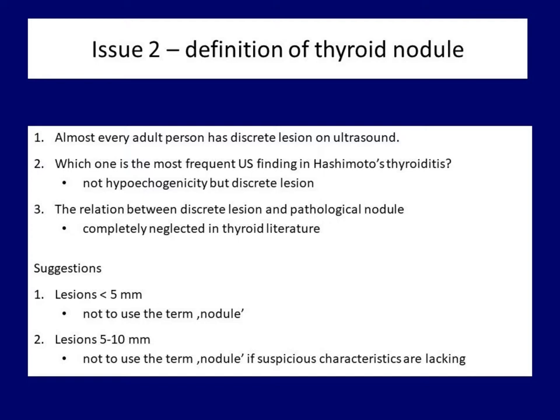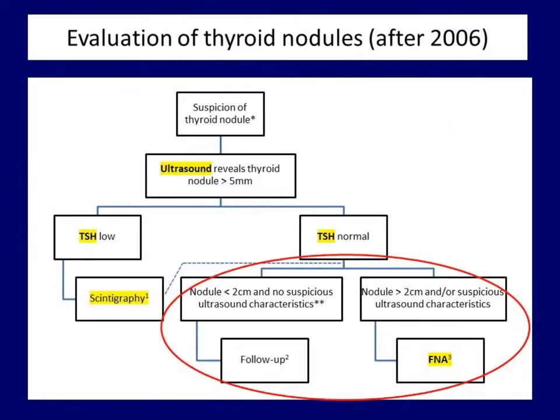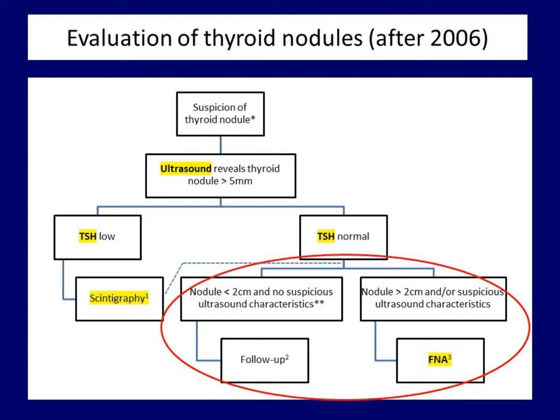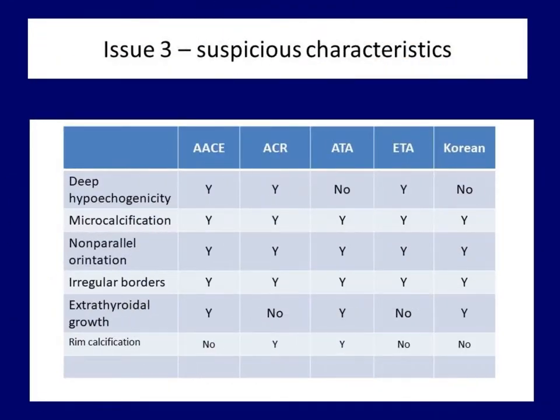The issue is first of all not a matter of terminology, but more importantly a matter of causing unnecessary anxiety to patients. We are now at the end of the algorithm — the indication of FNA. All guidelines published after 2006 rely on suspicious signs in nodules between 1 and 2 cm. During the entire course, I rely on the guidelines of five professional societies: the American Association of Clinical Endocrinologists and American College of Endocrinology, the American College of Radiology, the American Thyroid Association, the European Thyroid Association, and the Korean Society of Thyroid Radiology.